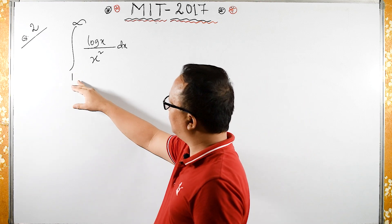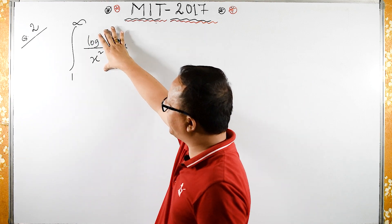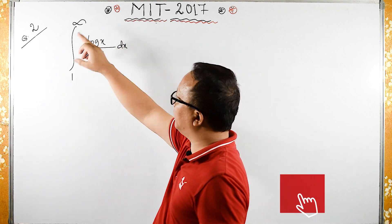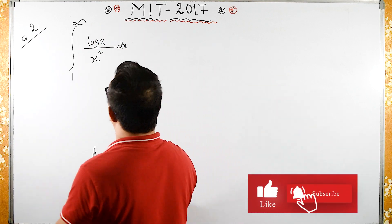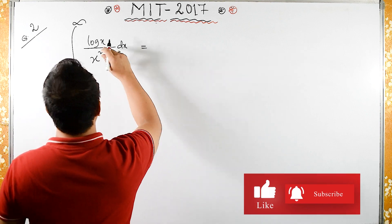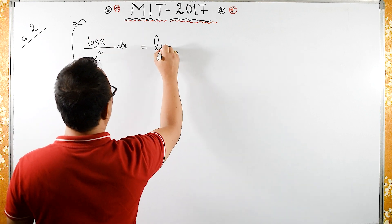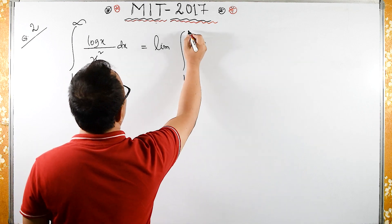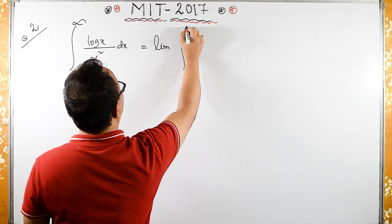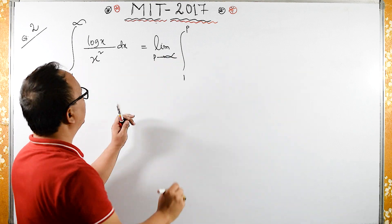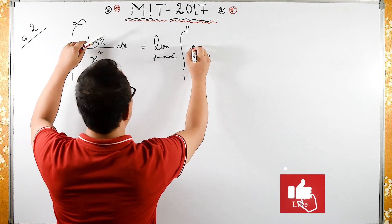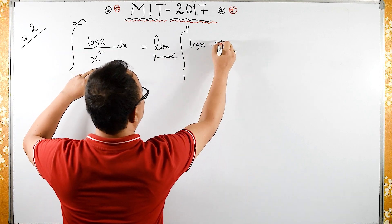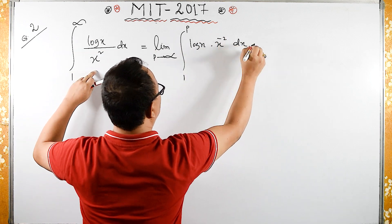We have the integral from 1 to infinity of x·ln(x) divided by x² dx. This infinity I will convert: it equals the limit as p tends to infinity of the integral from 1 to p of log(x) times x raised to minus 2 dx.